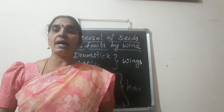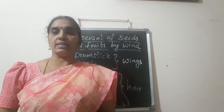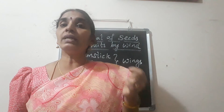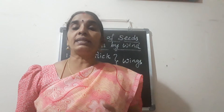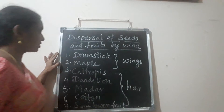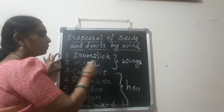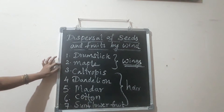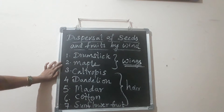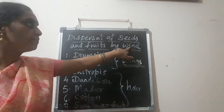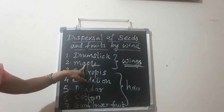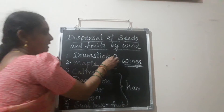The dispersal of seeds and fruits by wind: seeds are generally dispersed by wind because of their lightweight, or the hairy structures around them, or the wing-like structures around them. For example, drumstick and maple seeds have wing-like structures attached to them which help them to move through the wind and disperse.